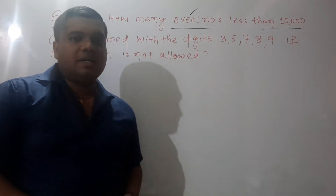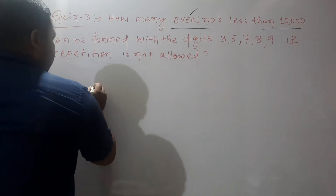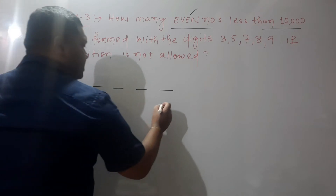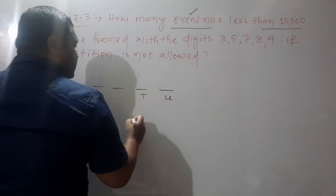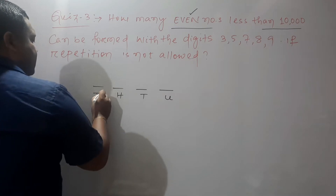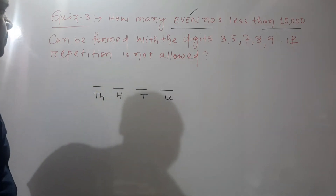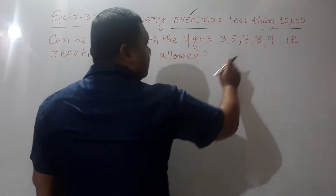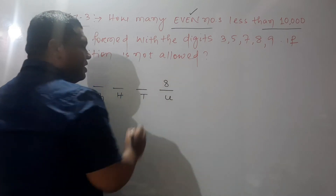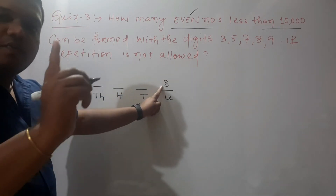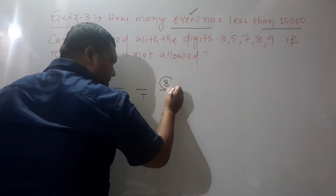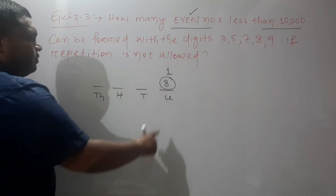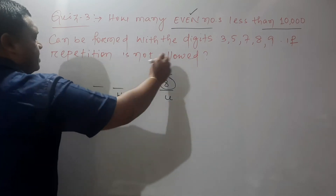Case 1: four-digit even numbers. We have unit place, tens place, hundreds place, and thousands place values. To fill the unit place, the number must be even. The only even digit available is 8, so there is one possible way to fill the unit place.